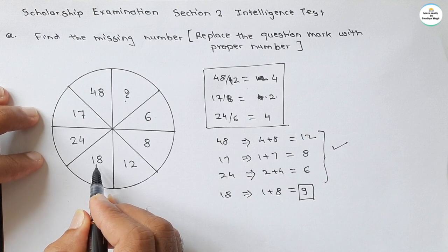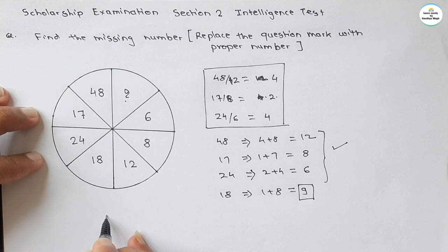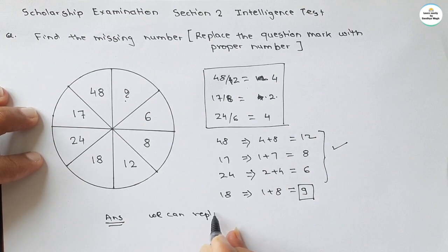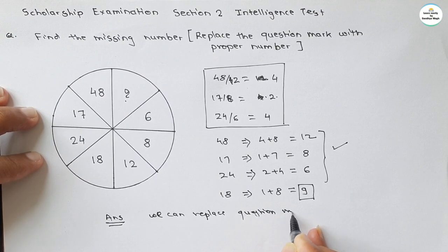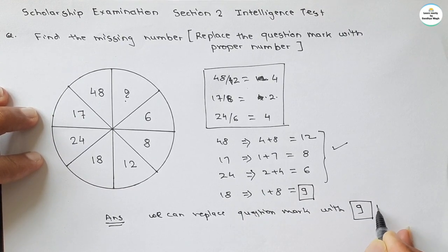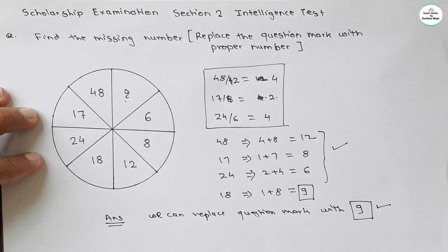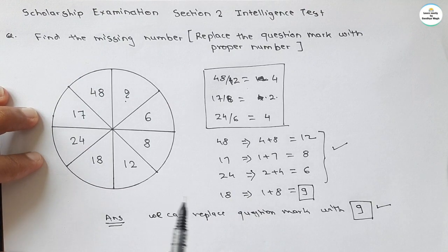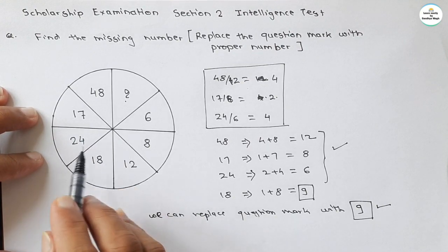So the number 9 is proper and our answer is 9. We can replace the question mark with 9. This is our answer. To get the answer, we took some trials. If we practice more questions, we will find that this type of question is very easy, because we just have to find the relation between opposite numbers.